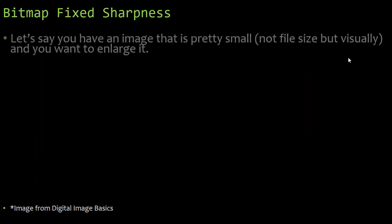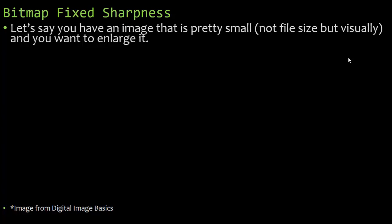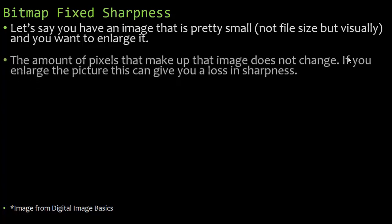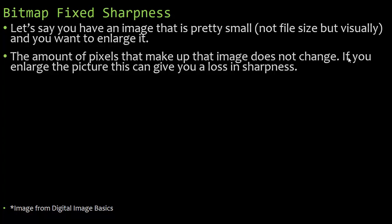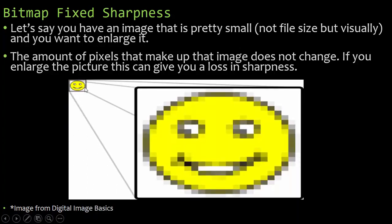Bitmap images have a fixed sharpness. If you have an image that is visually small and you want to enlarge it, the amount of pixels that make up that image does not change. So if you enlarge the picture, this can give you a loss in sharpness because you're not redefining the image resolution. Here we have a smiley face — it looks fine at the original size. But when you make it larger and stretch it out, the amount of pixels hasn't changed, and now we've lost sharpness. It's very blurry, the circle is jagged, and the smile is not smooth. So if you want to enlarge a bitmap image, you need to increase the amount of pixels so you don't lose sharpness.